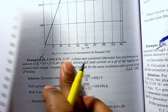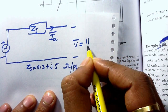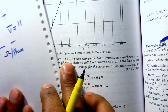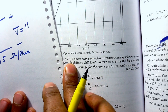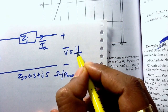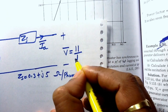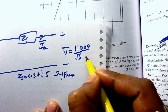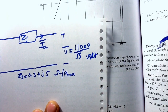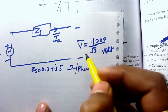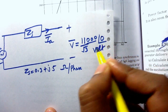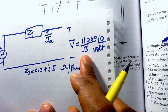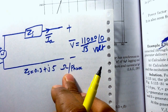It is given that the machine is operating at a rated voltage of 11 kilovolts. This 11 kilovolt is a line-to-line voltage, so the line-to-neutral voltage will be 11,000 divided by root 3 volts. The terminal voltage is always taken as reference, so in phasor form it is written as (11000 / √3) ∠0°.